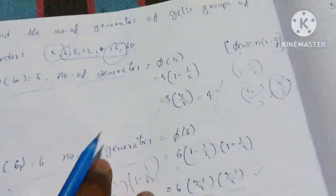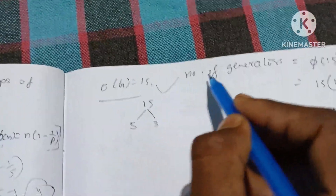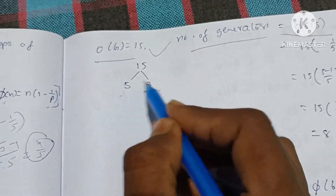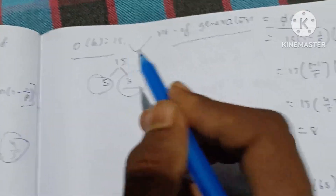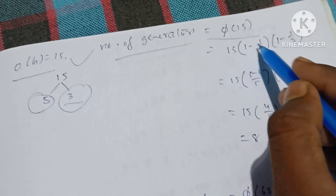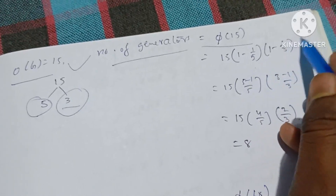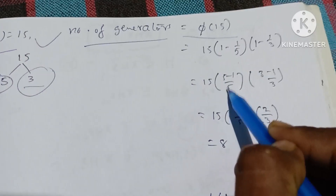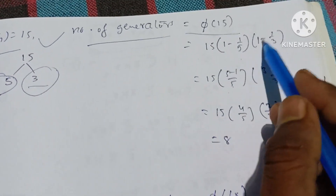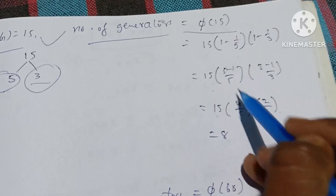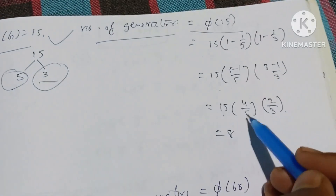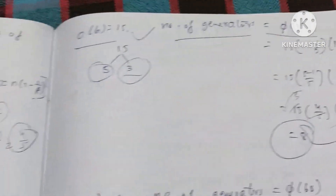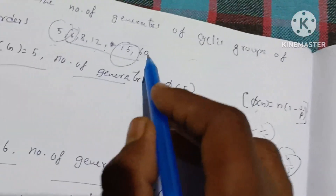Next, order 15. The order of G is equal to 15. Number of generators is equal to φ(15). 15 = 5 into 3; both 5 and 3 are prime. So φ(15) = 15 into 1 minus 1 by 5 into 1 minus 1 by 3, which is 15 into 4 by 5 into 2 by 3. The 5 and 3 cancel, giving 4 times 2 equals 8.